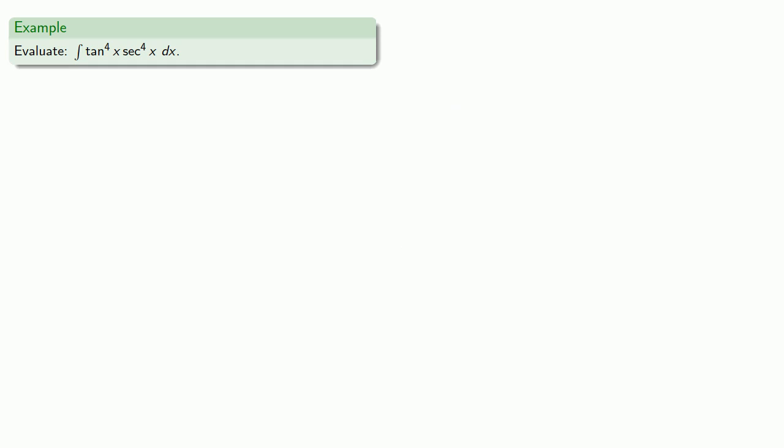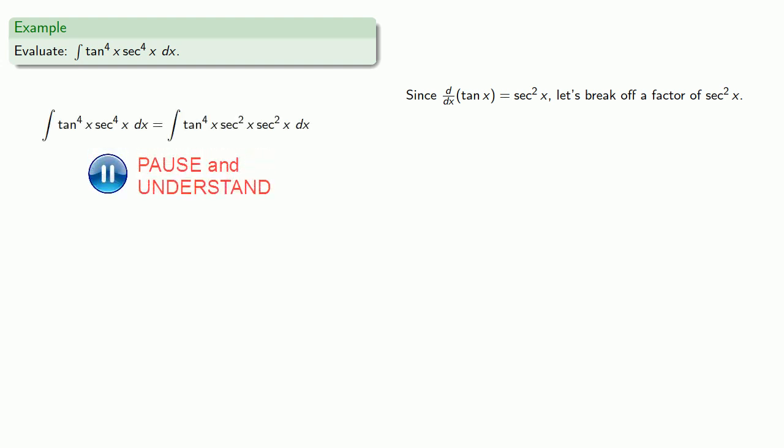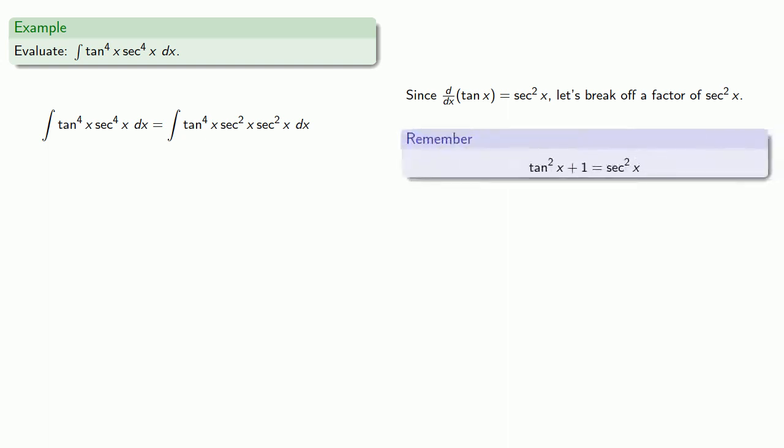Since the derivative of tangent equals secant squared, let's break off a factor of secant squared and see what happens. This will be useful if we can rewrite everything else in terms of tangent, and we have our Pythagorean identity, tangent squared plus 1 equals secant squared.